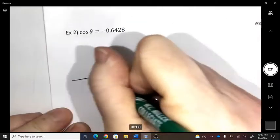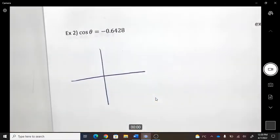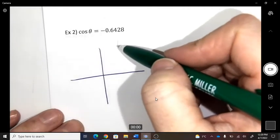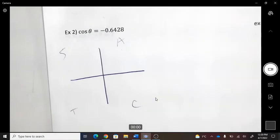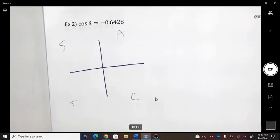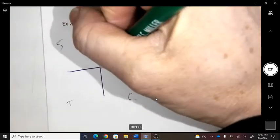Step two is figure out where you are. So when I do that, I'm using this, and I'm asking myself, where am I? So where is cos negative? On the left.